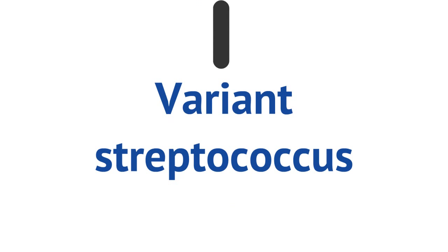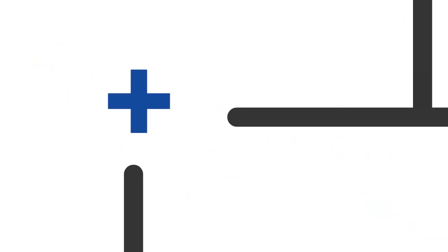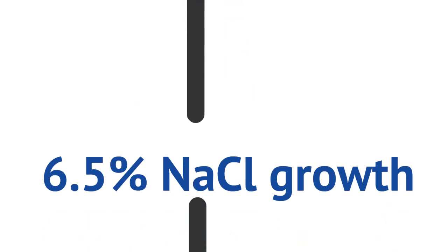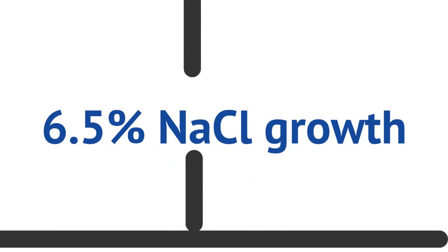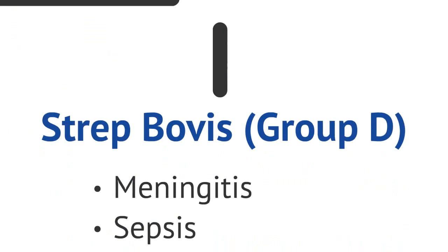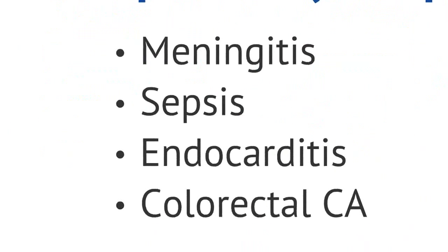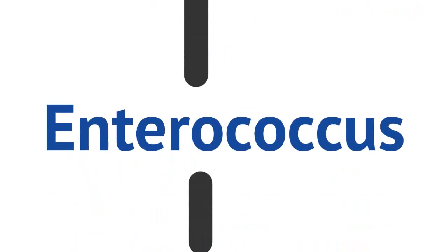Bile esculin-positive organisms have to be further differentiated using the 6.5% sodium chloride growth test. They place 6.5% sodium chloride solution within the agar and see if the bacteria grows. If the bacteria doesn't grow, then we know this organism is called Strep bovis or Group D Strep. It's commonly associated with meningitis, sepsis, and endocarditis, but also plays a very large role in the development of colorectal cancer, as patients who have Strep bovis have an increased risk of colorectal cancer.